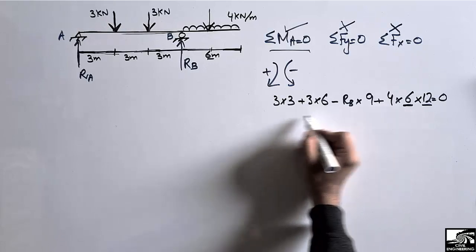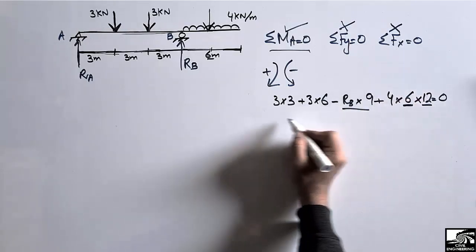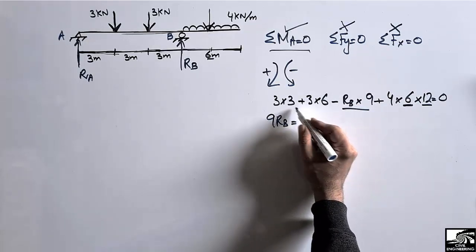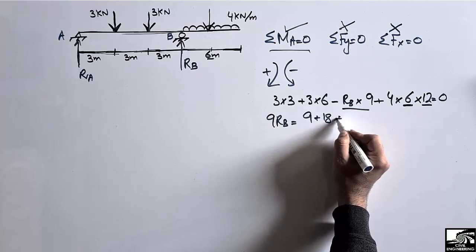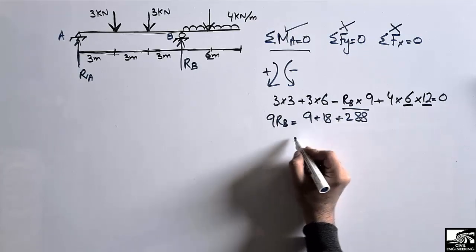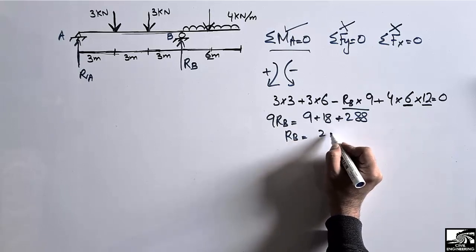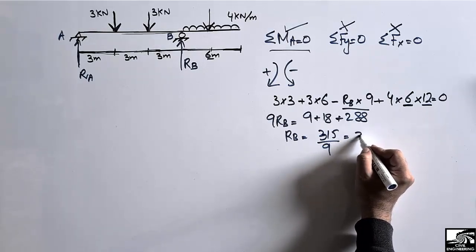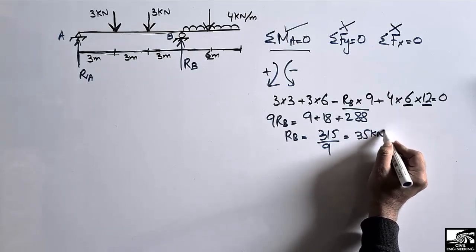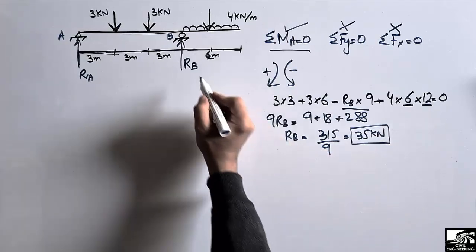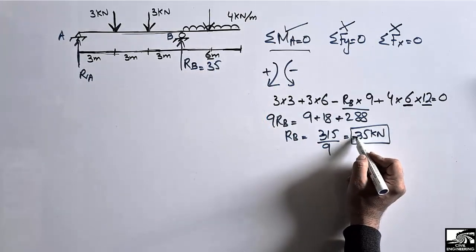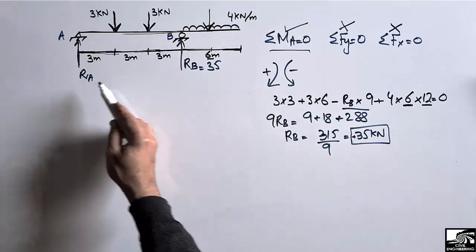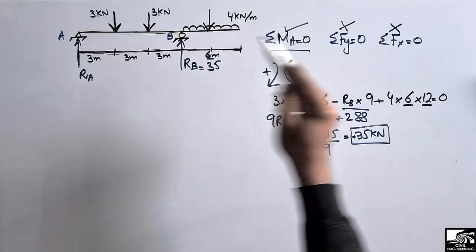Setting the summation of moments at A equal to zero and solving: 9 + 18 + 288 − 9·RB = 0, which gives RB = 315 / 9 = 35 kN. The positive result confirms our assumed upward direction for RB is correct.